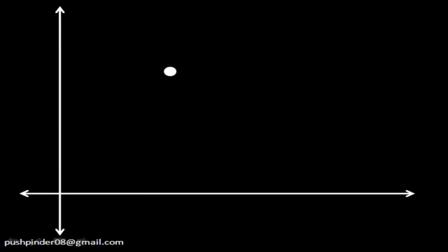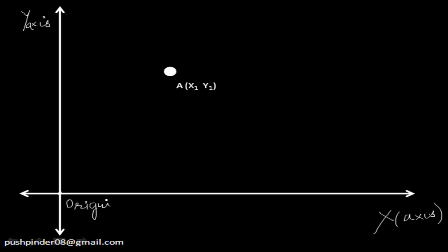So let's just go ahead and start with the general form of an equation. This line here is known as the y-axis, and this line over here is known as the x-axis. This point over here where the x-axis and y-axis meet is known as the origin. Why is it named as the origin? Because it has the coordinates 0 and 0 — the x-coordinate and the y-coordinate are both 0 at this point.